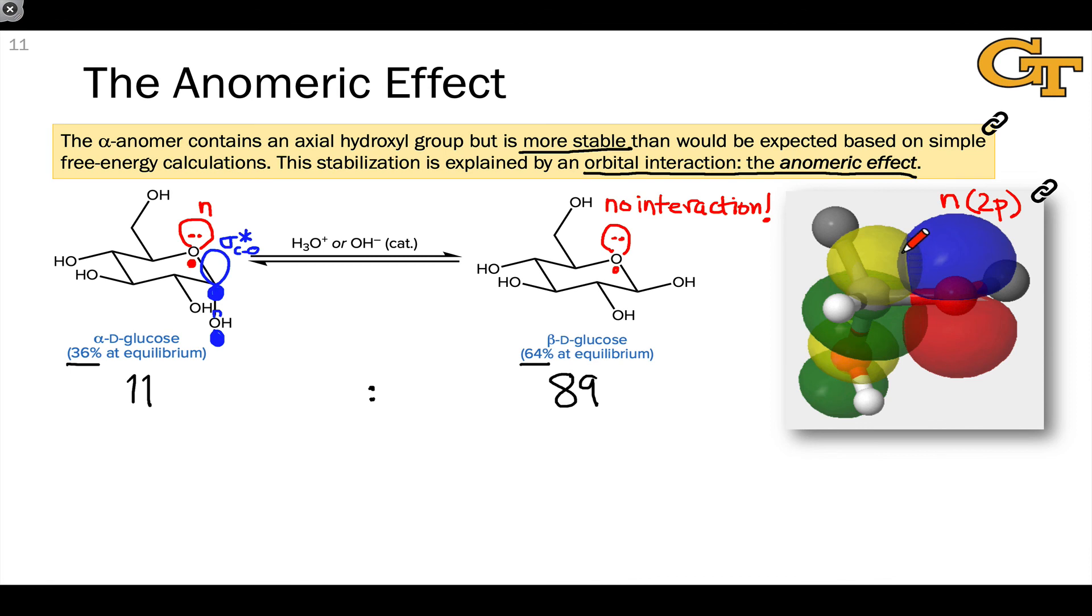Notice that the acceptor orbital, or the empty orbital in the interaction, is the C-O sigma star orbital with the larger lobe on carbon and very strong overlap with the adjacent in orbital. That orbital interaction results in stabilization.